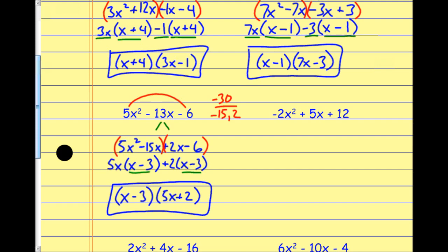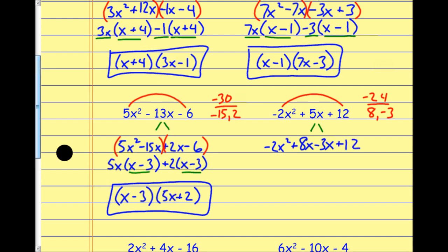I build a bridge: that's negative 24. Two numbers that multiply to negative 24 but add to positive 5 are positive 8 and negative 3. I split up the middle term into 8x and minus 3x — same as 5x. Everything else tags along. I do my factoring by grouping: out of the first group I factor out negative 2x (because the first term has a negative), leaving x minus 4; out of the second group I factor out negative 3, leaving x minus 4. The factors are x minus 4 and negative 2x minus 3.